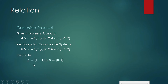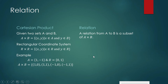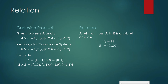Let us give some examples of your Cartesian product. Let's say A contains two elements and B contains its elements. We shall write A cross B, which contains all ordered pairings of the elements of A and B. A relation from A to B is a subset of your cross product A cross B. So any subset of your cross product is going to be a relation. The empty set is also a subset, so it is an example of a relation from A to B.